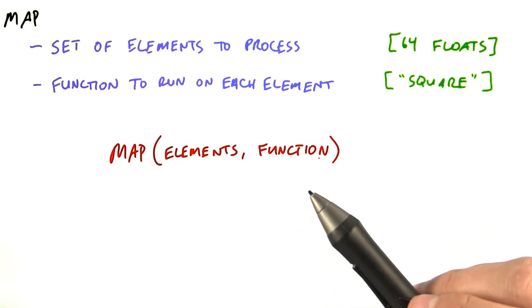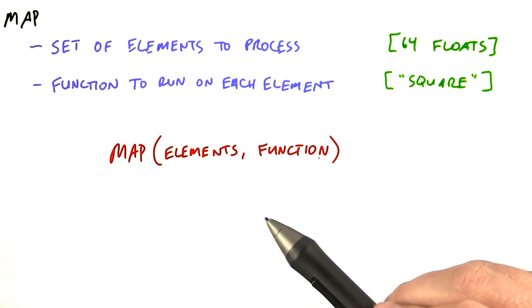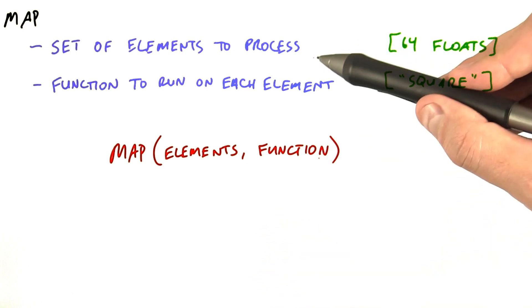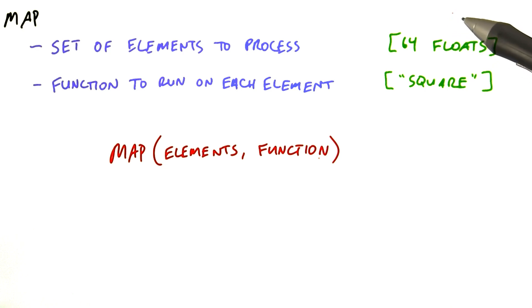Let's take a broader view of what we just did. We have two ingredients here that are going to lead to an interesting and crucial abstraction called map. First, we have a set of elements that we'd like to process. In our example, this set is an array of 64 floats.